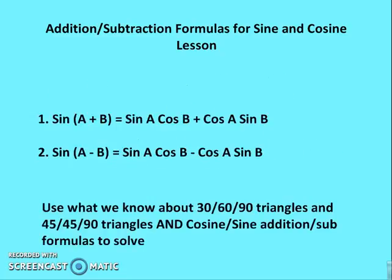Now let's get the sine addition and subtraction formulas. Sine(a + b) = sin a · cos b + cos a · sin b. Sine(a − b) = sin a · cos b − cos a · sin b.